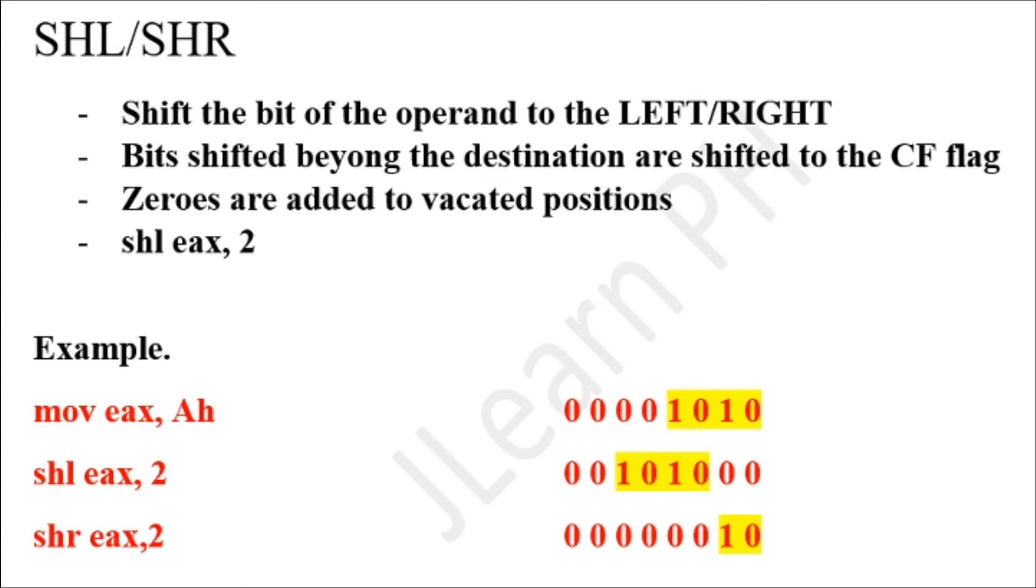Let's have an example. Let's say you have mov EAX, AH, where A is a hexadecimal number. If you represent that in binary, it will become four zeros and then 1010. Then you have SHL EAX, 2, so we will be shifting